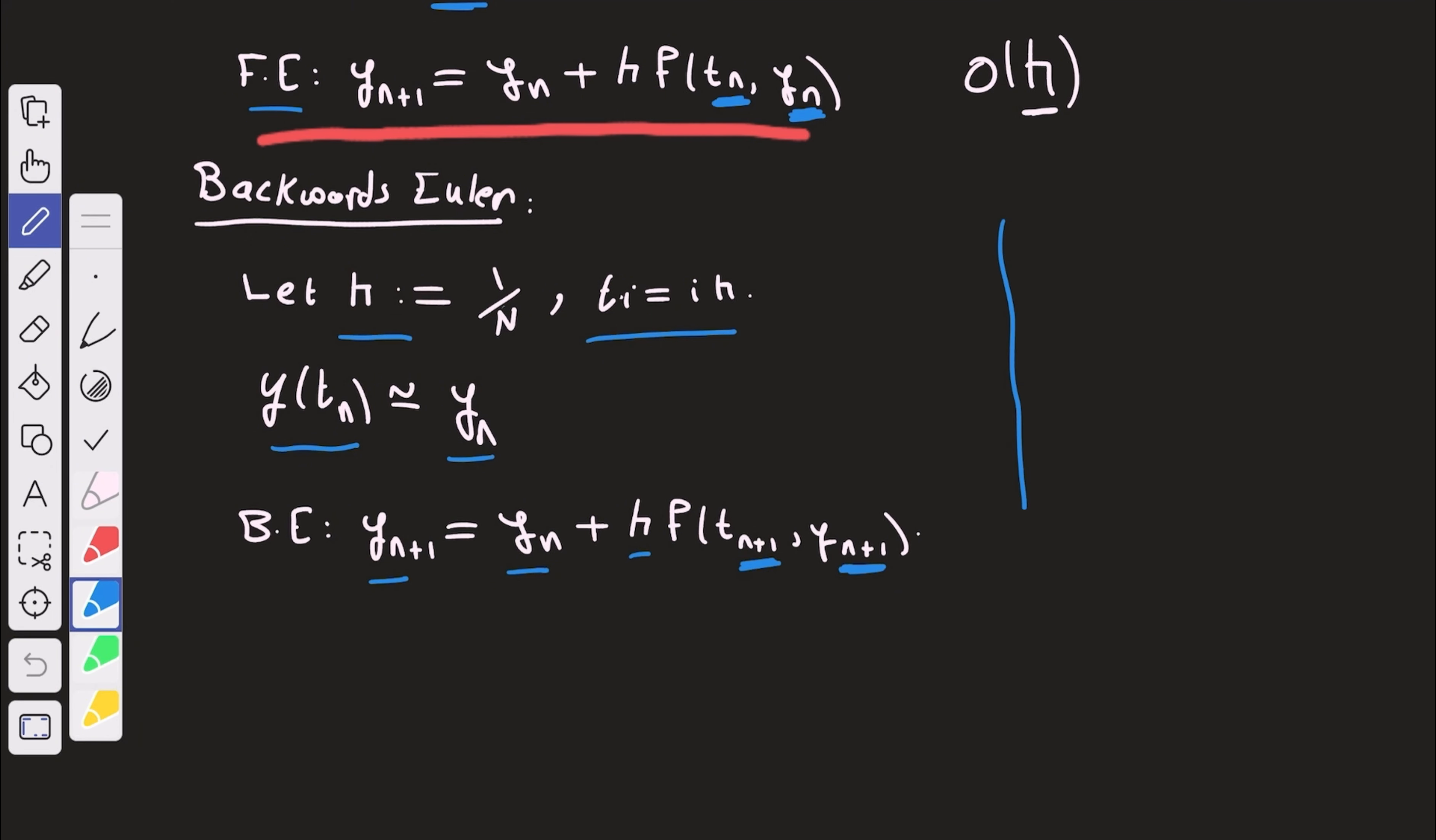It's just a similar idea. However, so let's say this is the interval 0, 1, and this is tn, and this is tn plus 1. The idea is that if this is the function that you have, say that this is the function at tn to tn plus 1, the idea is to approximate this function by its value at tn plus 1. Unlike what we did for forward Euler, we approximated it at tn.